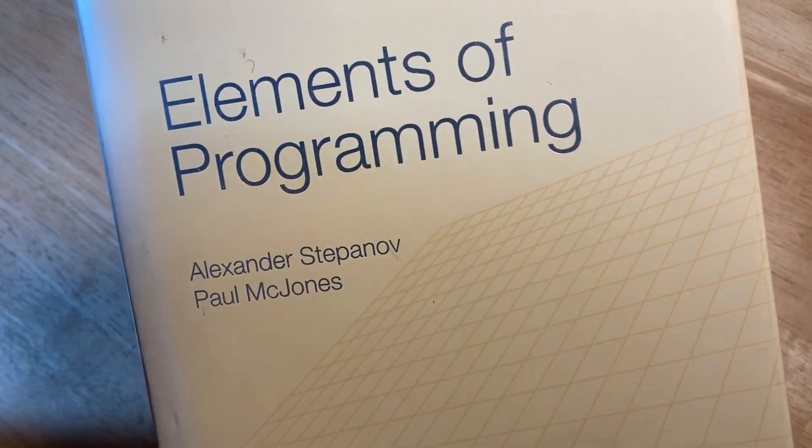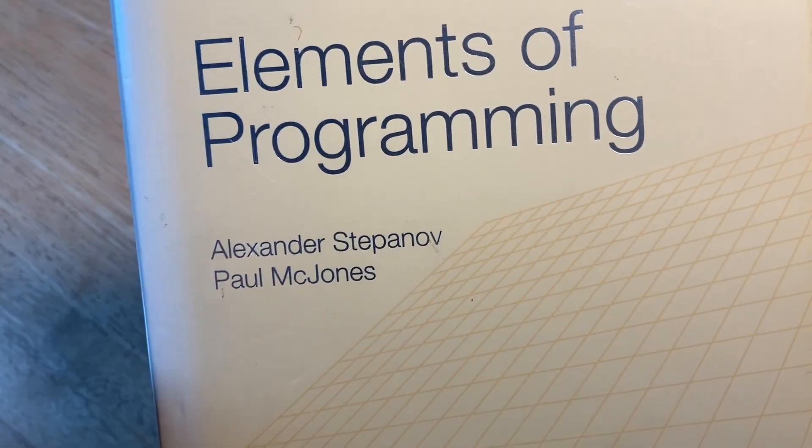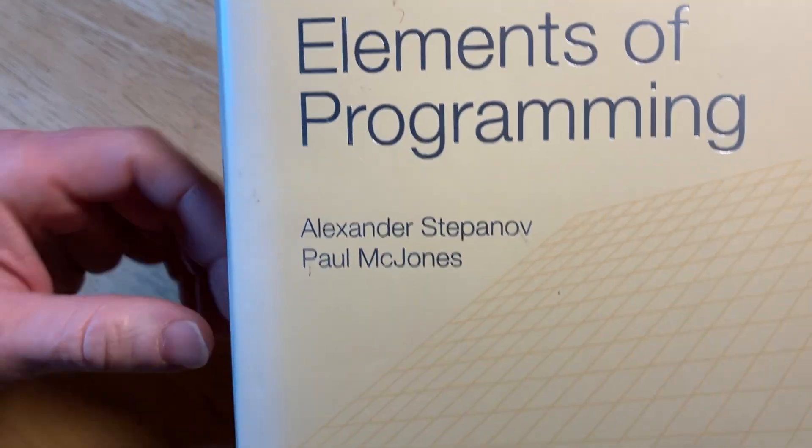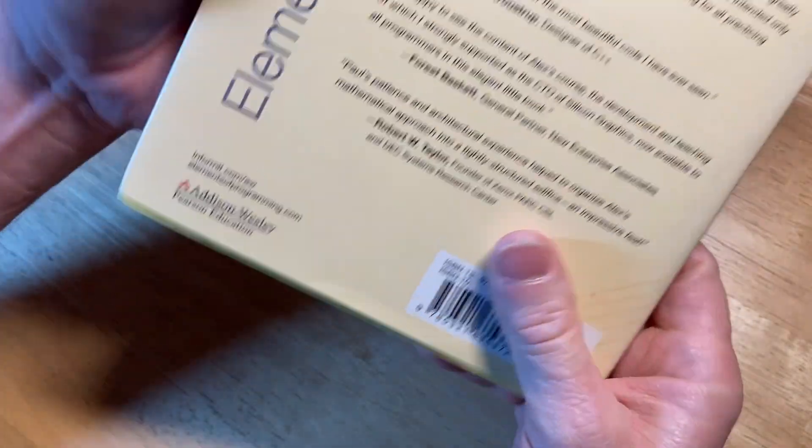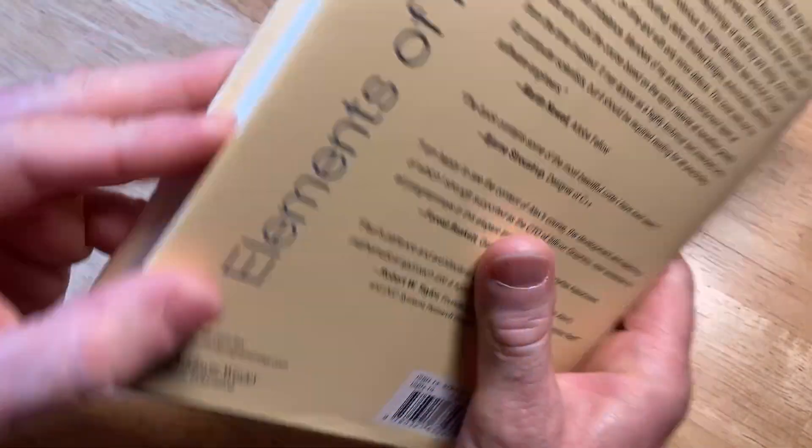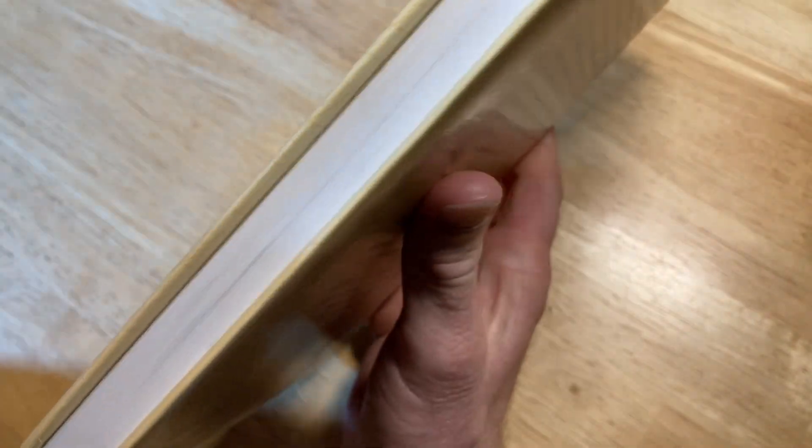This is Elements of Programming by Alexander Stepanov and Paul McJones. It's by Addison Wesley, that's the publishing company, and this one has a dust jacket. Before we look at this book...